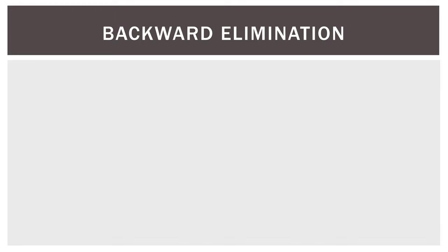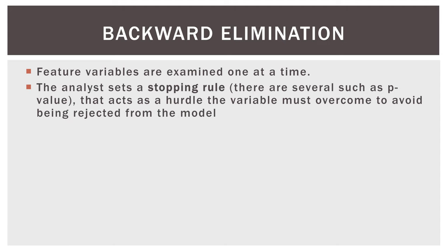So backward elimination, just like forward selection, feature variables are examined one at a time. The analyst sets a stopping rule. There are several, such as p-value, that we'll use because it's easy to understand, that acts as a hurdle the variable must overcome, in this case, to avoid being rejected from the model. Not included, it's included by default, but to avoid being rejected from the model.